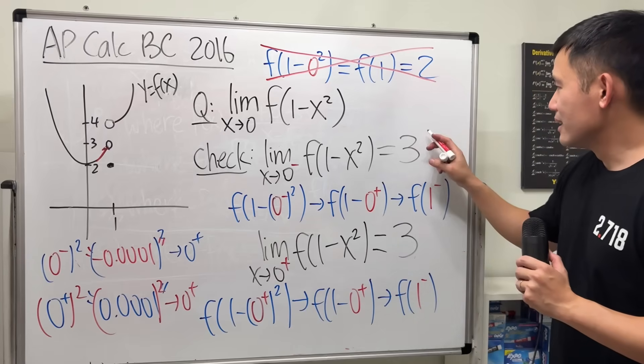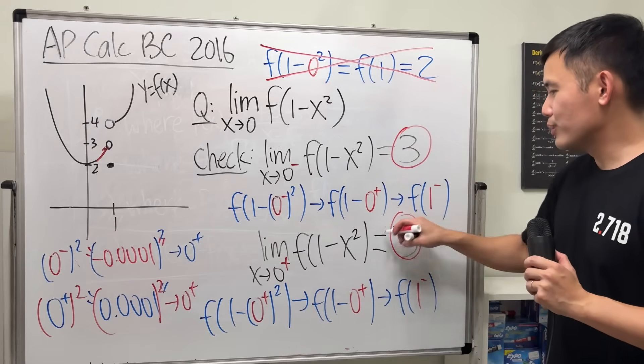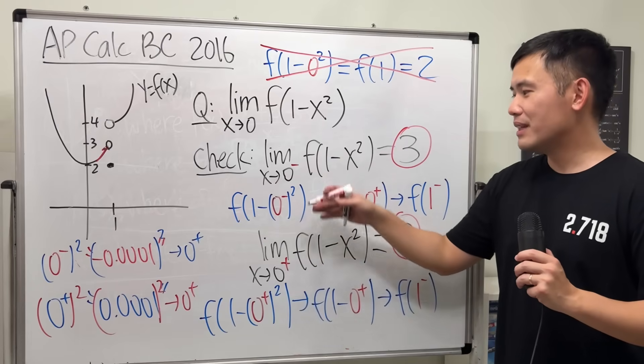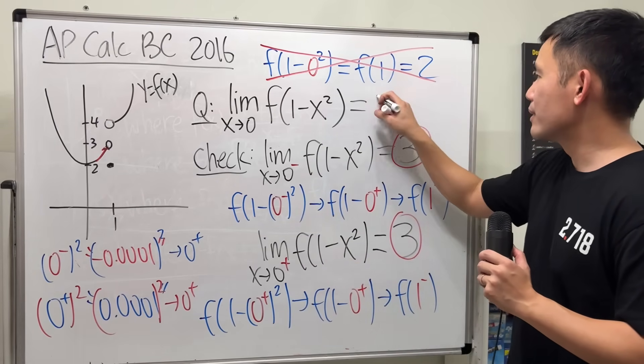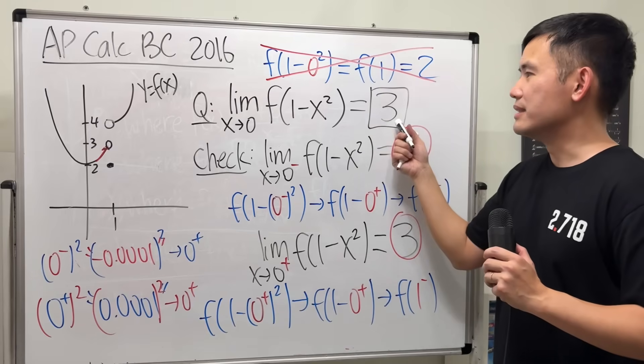Now, as we can see, this is equal to that. When the left limit and also right limit are equal, we can come here and say the answer for this right here is that number. That's why this right here is equal to 3,